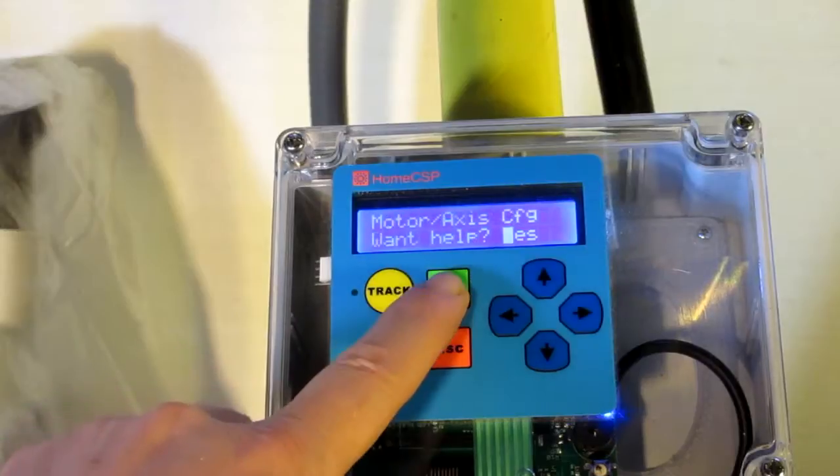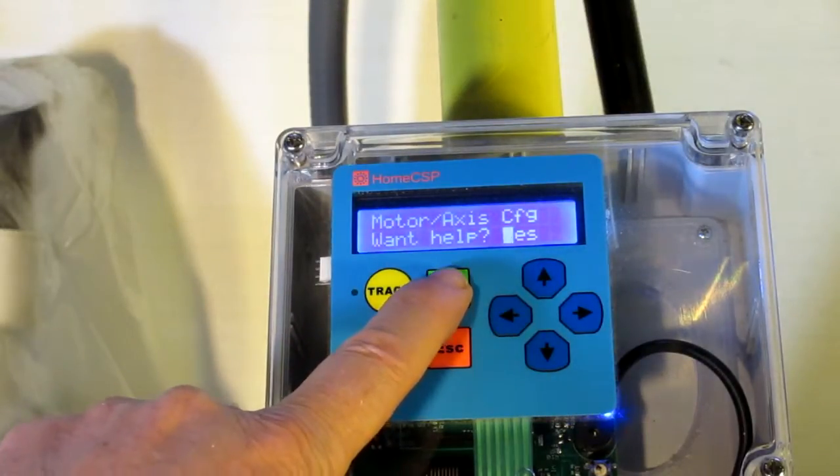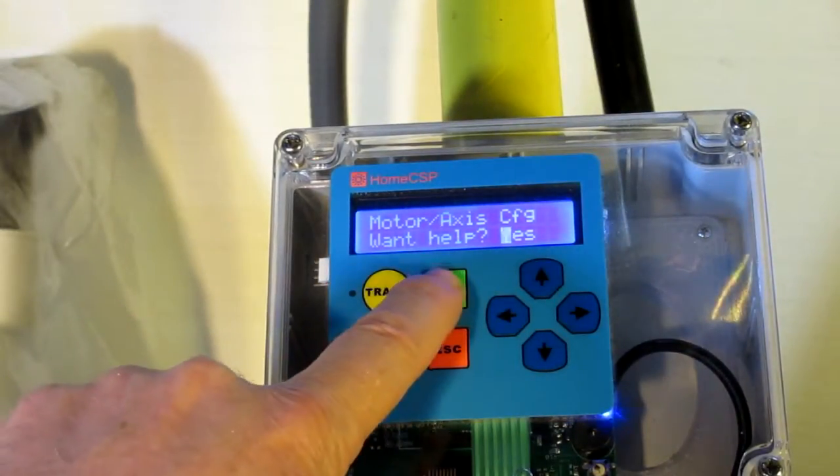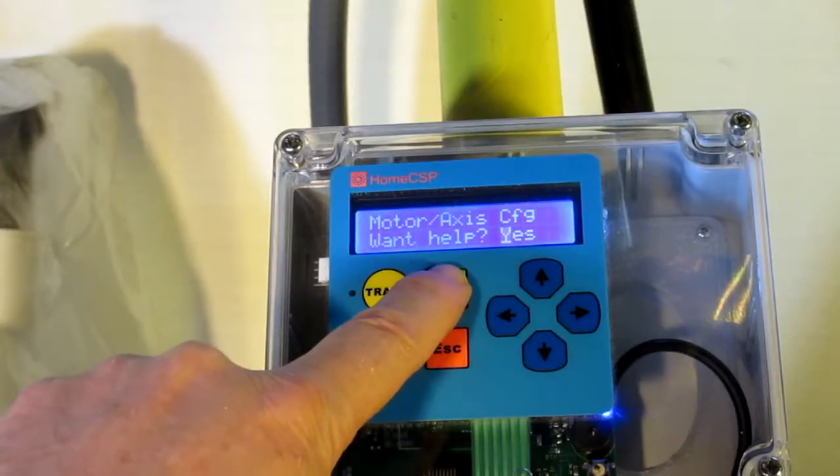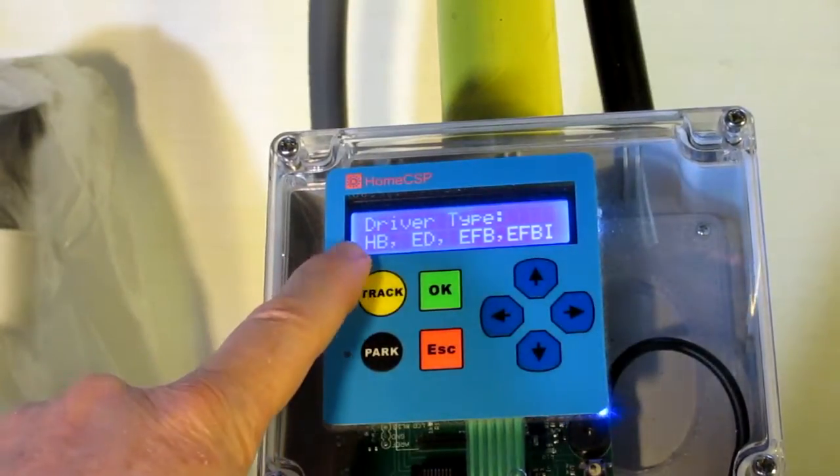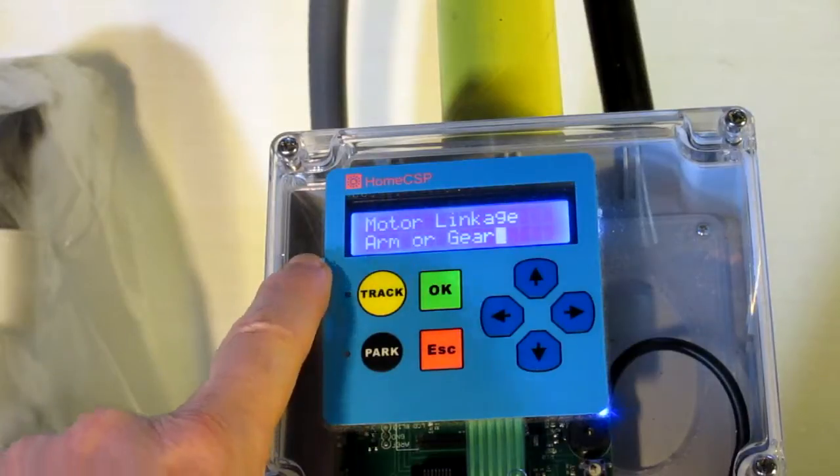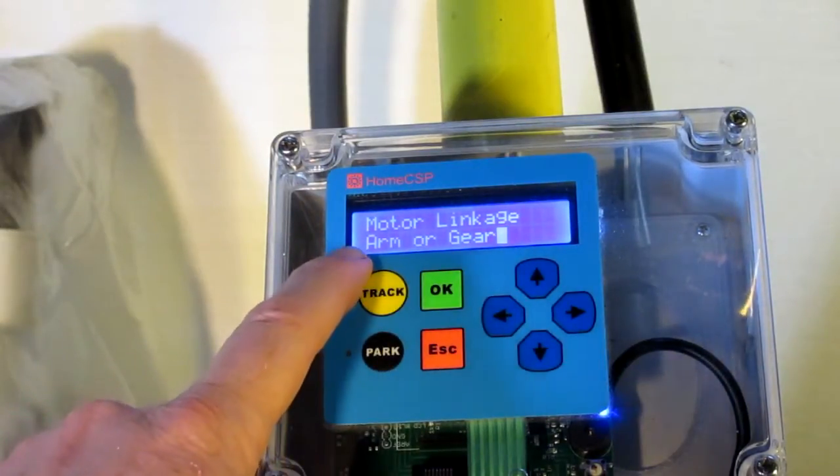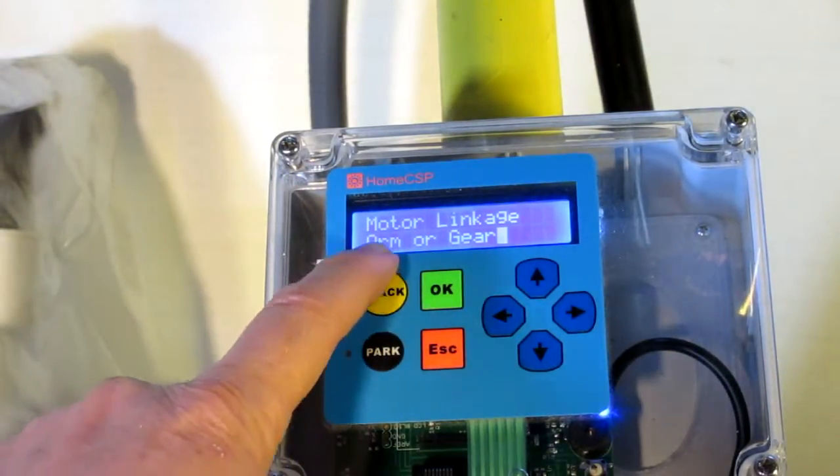All right, so let's go ahead and do the help. This will be familiar with us. So as before, we're going to select the driver type, tell what sort of linkage we've got, actuator arm or slewing gear.